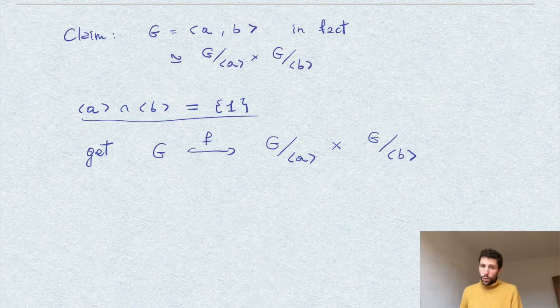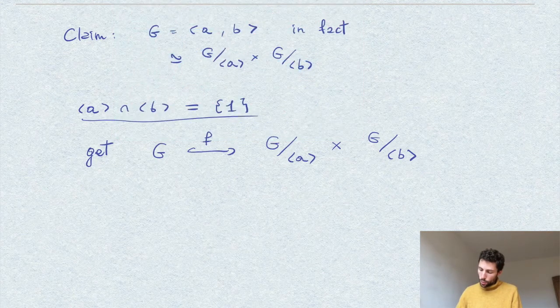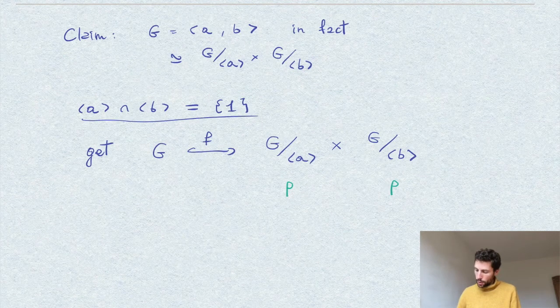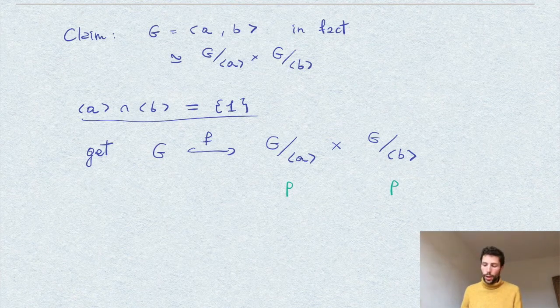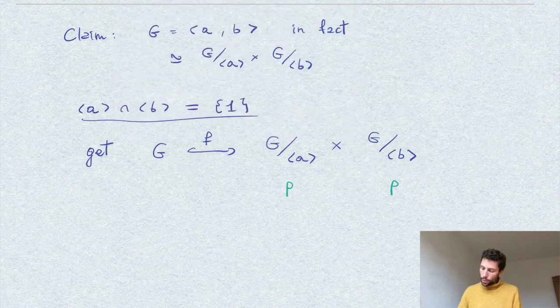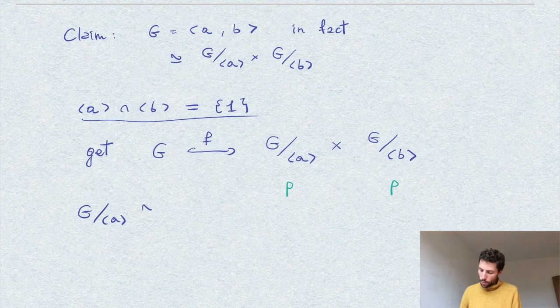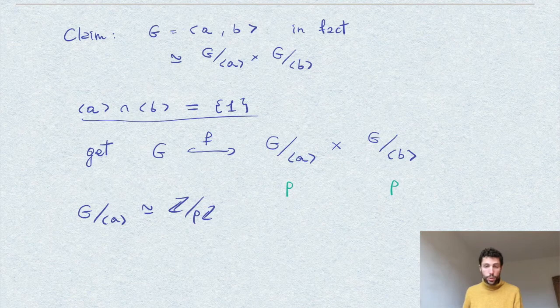So of course, this group here, G over A and G over B, they have order P, since are the quotients of a group G of order P squared by a subgroup of order P. And therefore, we have that G over A is just a copy of Z_P. Same for G over B.